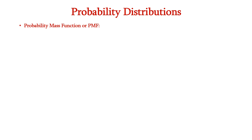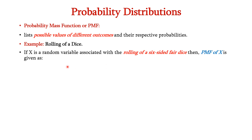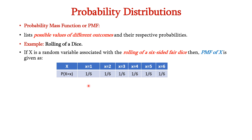First, let us see about the probability mass function or PMF. It lists possible values of different outcomes and their respective probabilities. Consider the example of rolling a dice. If X is a random variable associated with rolling a six-sided fair dice, then the PMF of X can be given as shown in the table. Here X can take any value from 1 to 6 and the probability P(X = x) can be represented as 1/6, since 6 is the total number of outcomes. So the probability of getting each face is 1/6.